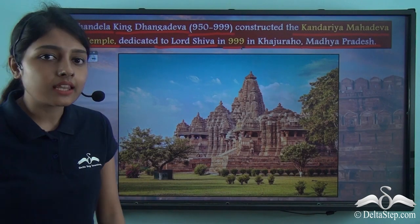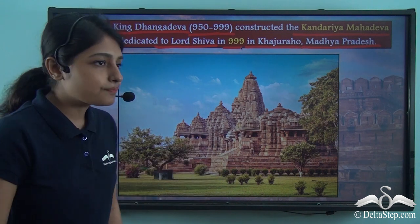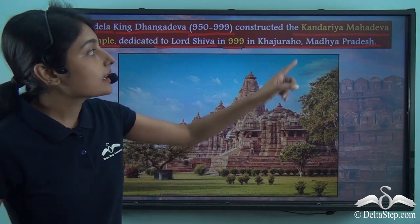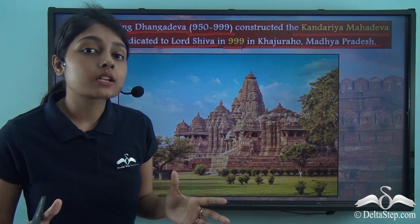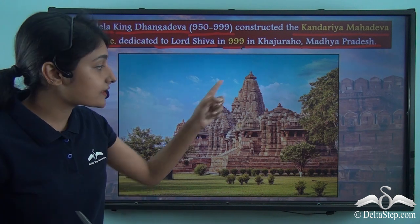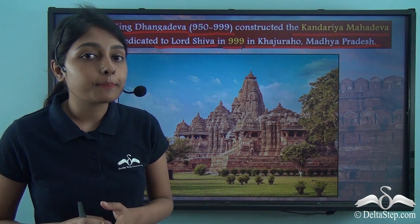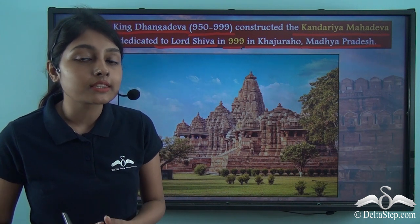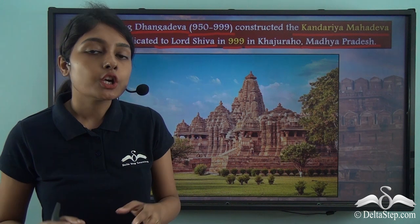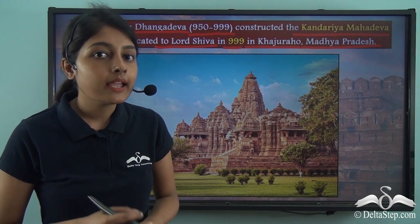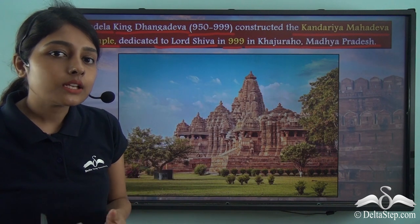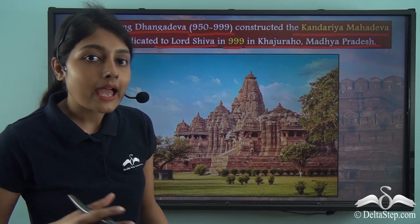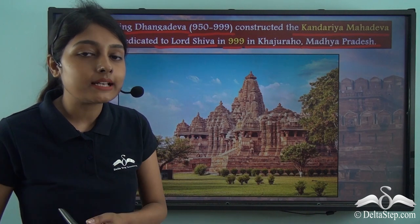This temple is known as the Kandaria Mahadeva temple, and the main deity is Lord Shiva. It was constructed in the year 999 by King Dhangadeva of the Chandela dynasty. This name literally means 'the great god of the cave.' The Kandaria Mahadeva temple is one of the most beautiful and ornate Hindu temples found in the medieval period in Khajuraho, Madhya Pradesh. By now we have learned about two great architectural pieces: the Qutub Minar and the Kandaria Mahadeva temple.